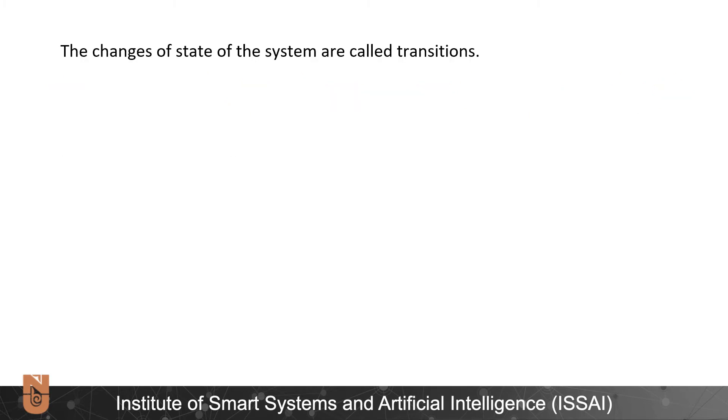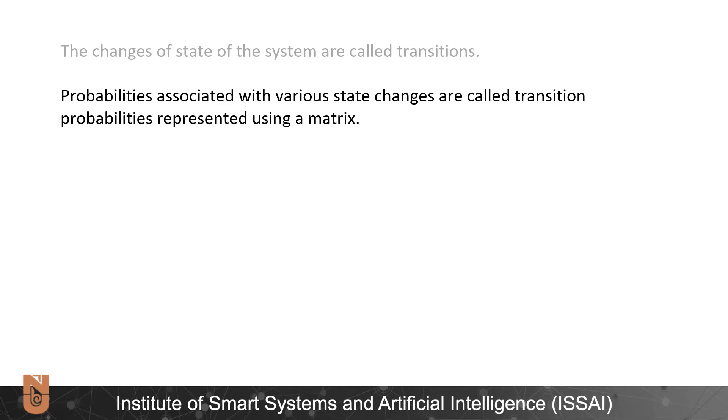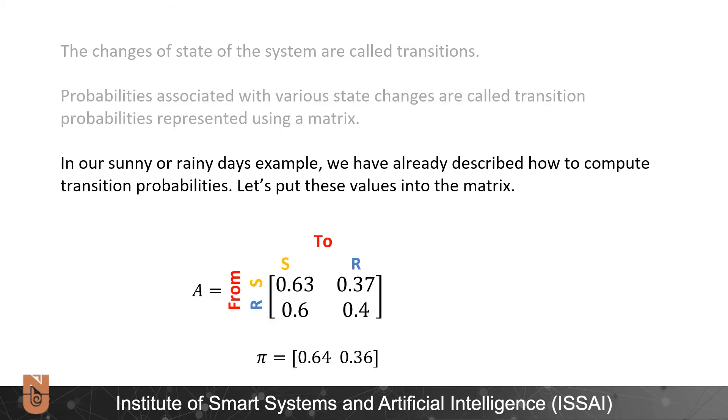The changes of the state of the system are called transitions. Probabilities associated with various state changes are called transition probabilities and represented using a matrix. In our sunny or rainy days example we have already described how to compute transition probabilities. Now by putting these values into the matrix we can construct transition matrix A and using initial distribution values we can construct the initial distribution vector pi.